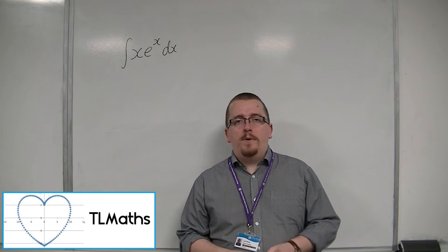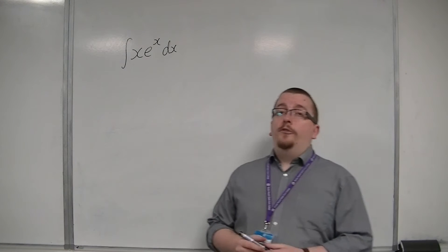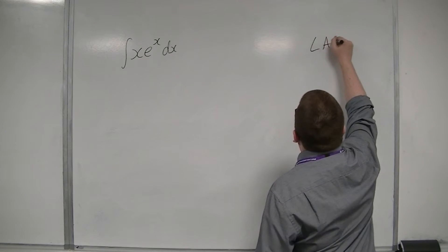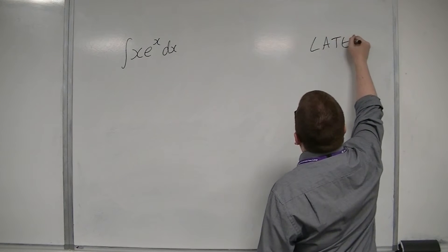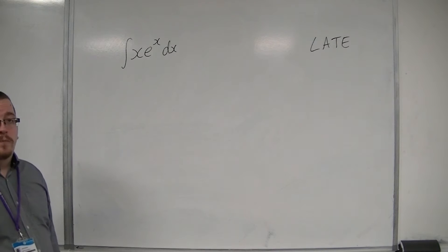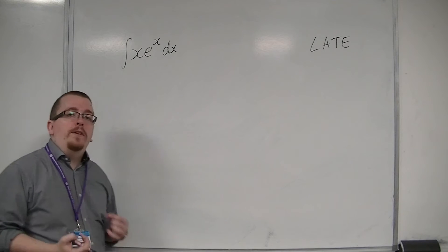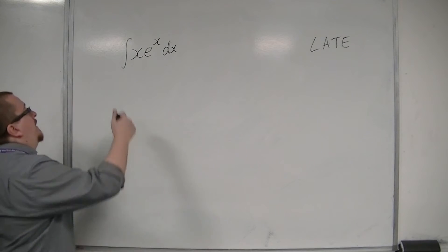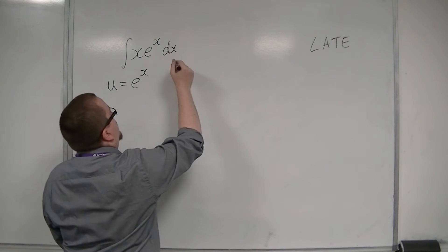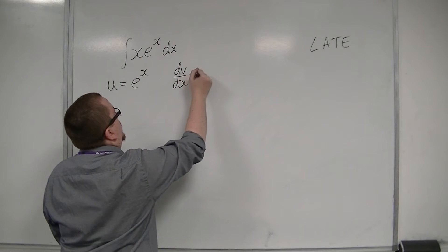So what happens when integration by parts goes wrong? The reason why it goes wrong is if you don't use the LIATE rule, where you don't know in which order to pick u. So let's say we made the wrong choice — we selected u to be e to the x, and dv by dx to be equal to x.